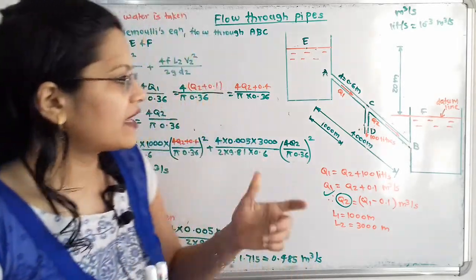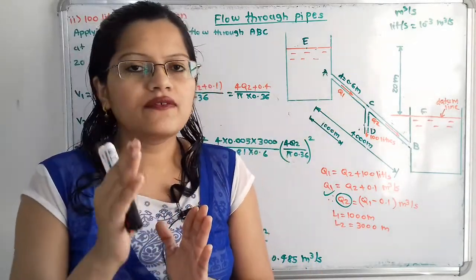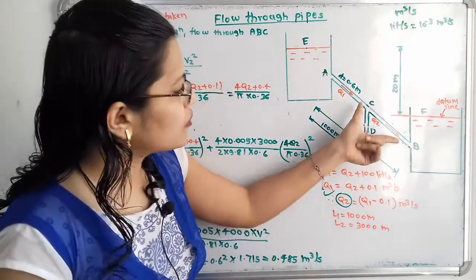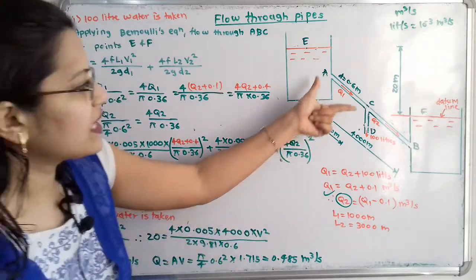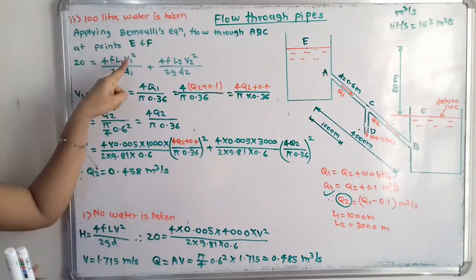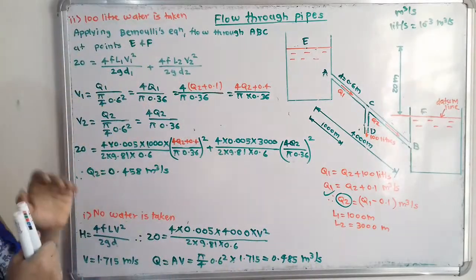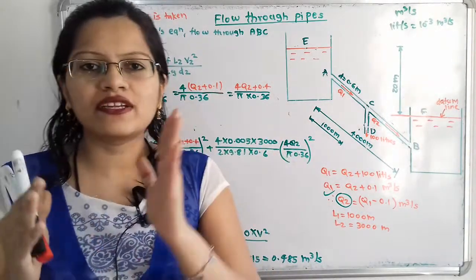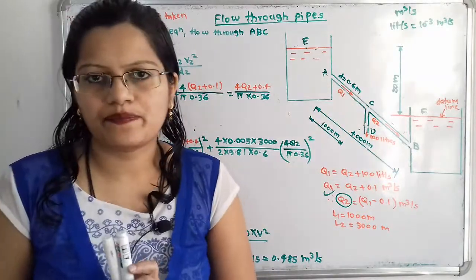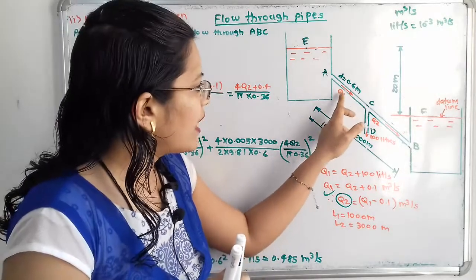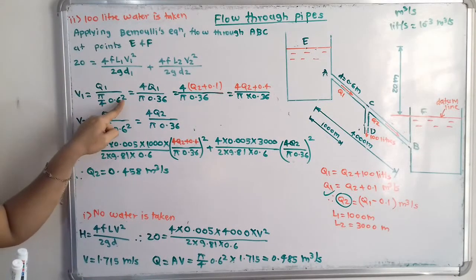Since Q = A·V, we write V = Q/A. The area is the same for both sections (diameter = 0.6 m). For section AC: V1 = Q1 / (π/4 × 0.6²) = 4Q1 / (π × 0.36). Substituting Q1 = Q2 + 0.1, this becomes V1 = (4Q2 + 0.4) / (π × 0.36).